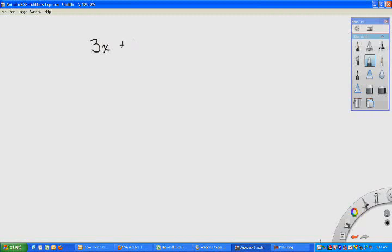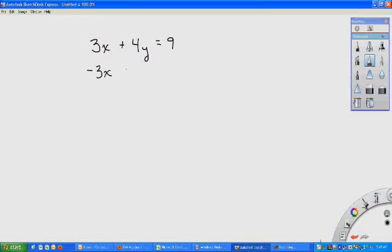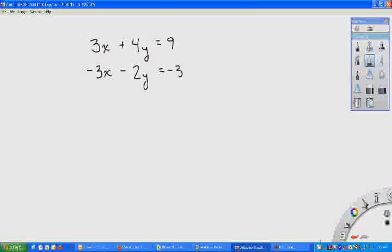So let's practice another one, just a nice basic elimination equation. We're going to add them together. Go ahead and write these out in your notes. 3x plus 4y equals 9, and negative 3x minus 2y equals negative 3.